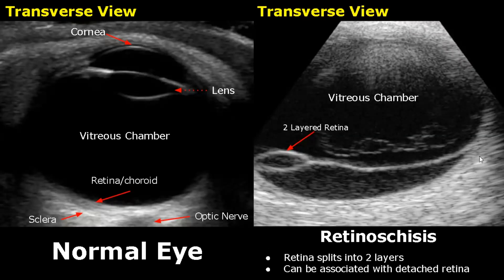In retinoschisis, the retina splits into two layers. It can be associated with a detached retina.